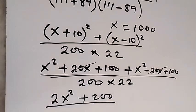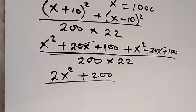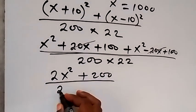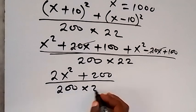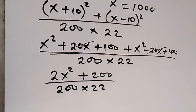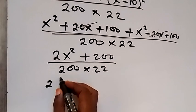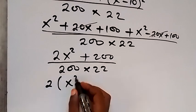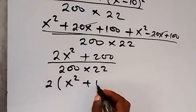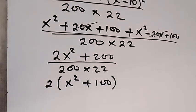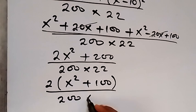Then over 200 times 22, and from there we can factor 2 out from the numerator there. And then we have 2 into bracket x squared plus what is left here is 100.